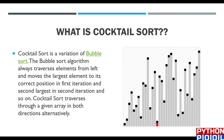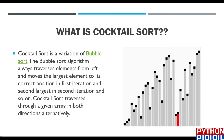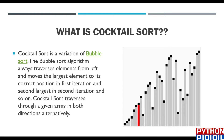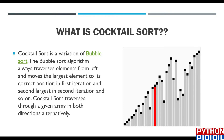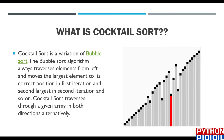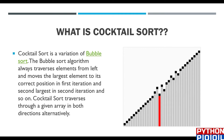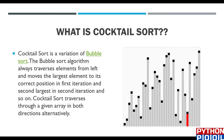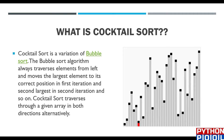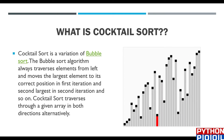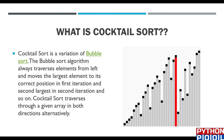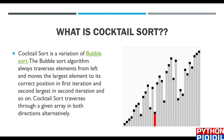Cocktail sort is nothing but a variation of bubble sort. In bubble sort, we swap elements according to their order. We do the same in cocktail sort, but we modify the bubble sort algorithm by comparing the list in two ways: first in the forward way and then in the backward way.